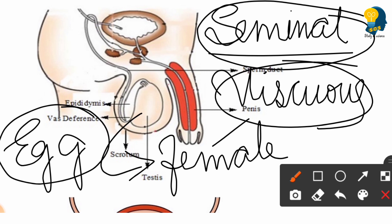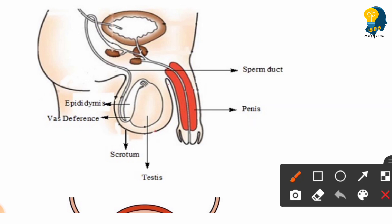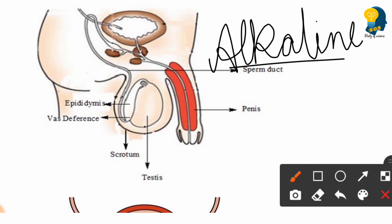If the sperm has to reach the fallopian tube, the viscous fluid released by the seminal vesicle helps in the movement of the sperm. Additionally, the female reproductive system is generally acidic in medium, but for sperms to survive inside the female reproductive system, they need an alkaline medium. This alkaline medium is also created by the viscous fluid released by the seminal vesicle.